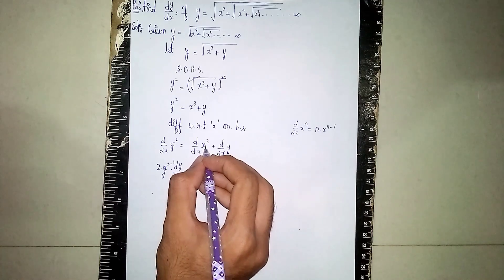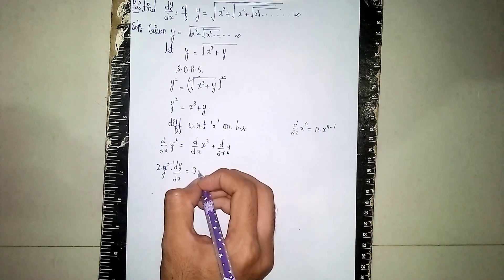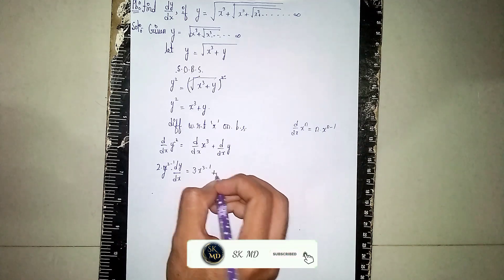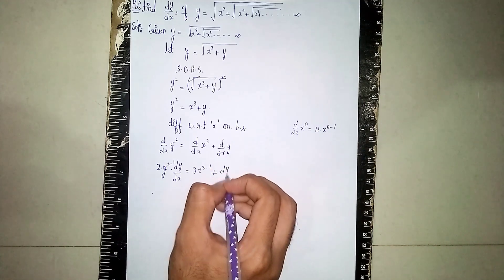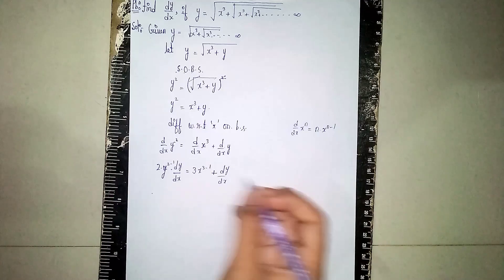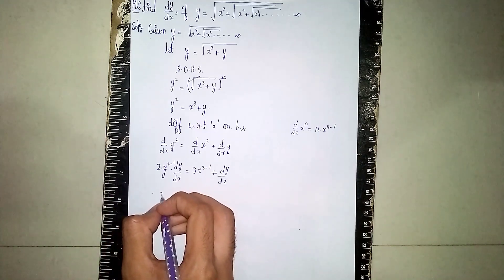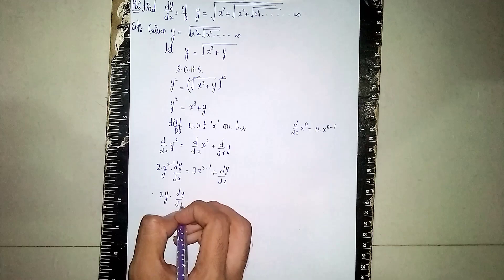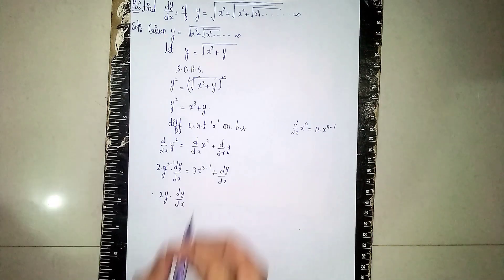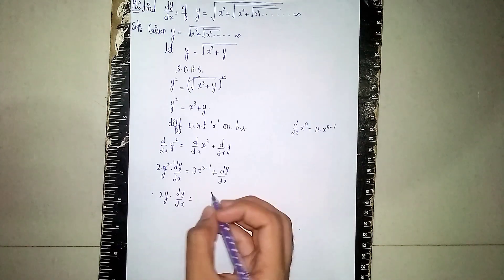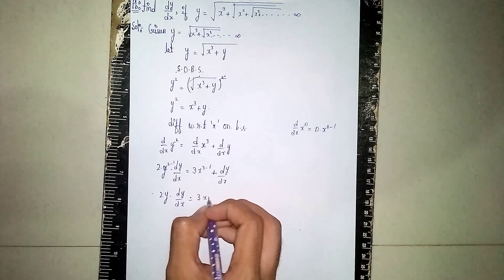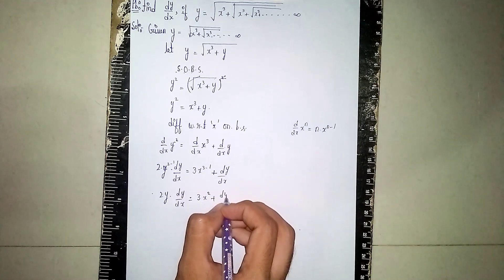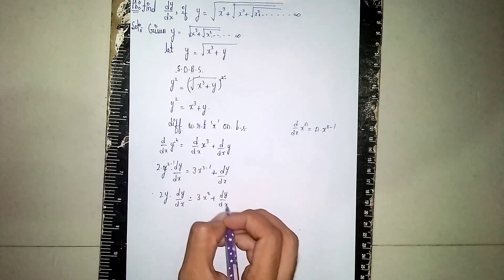Applying the same formula to x³: it becomes 3x³⁻¹ = 3x². And differentiating y with respect to x gives dy/dx. So we have: 2y · dy/dx = 3x² + dy/dx.